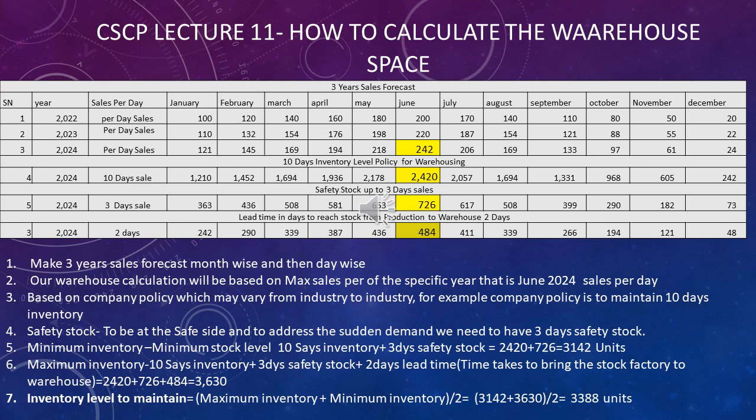There are two inventory levels to consider: minimum and maximum. Minimum inventory is the 10-day sales inventory plus safety stock. Safety stock — typically 3 days — is the buffer held to address demand fluctuations and sudden unexpected demand spikes. So minimum stock equals 10-day inventory (2,420 units) plus 3-day safety stock (726 units), giving 3,142 units as the minimum inventory.